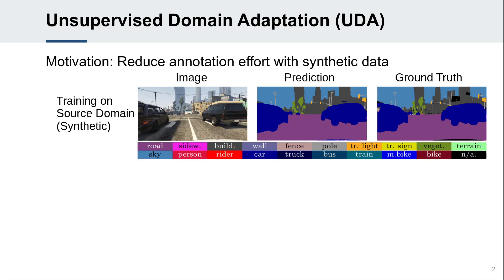Semantic segmentation is the task of classifying each pixel of an image. Training a neural network for this task usually requires expensive pixel-wise annotations of real-world images. Therefore, it would be desirable to exploit other domains that are easier to annotate, such as synthetic data.